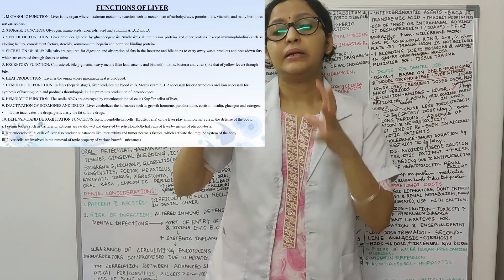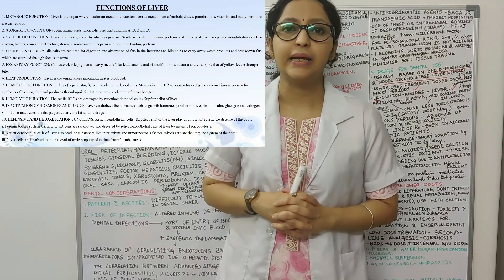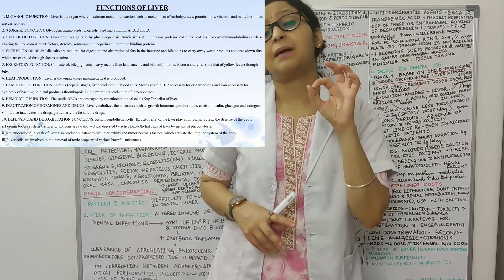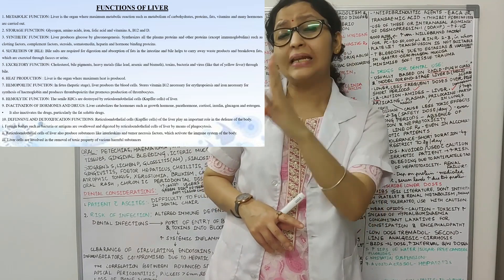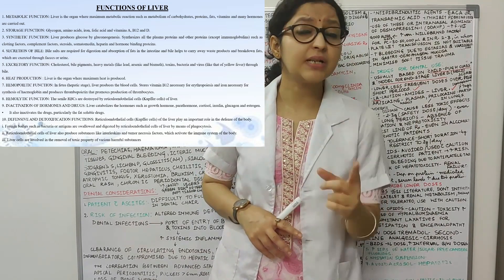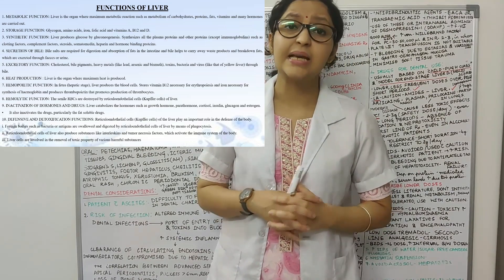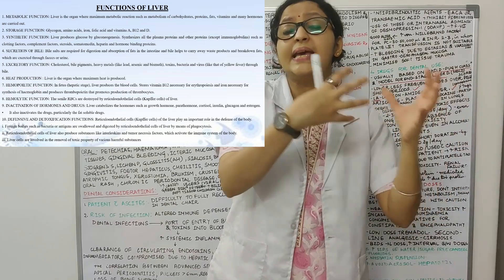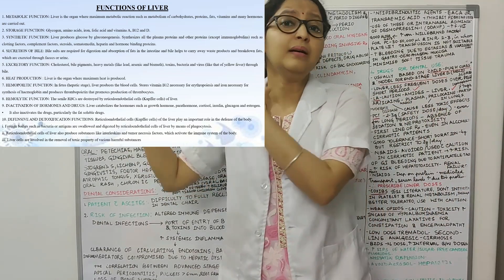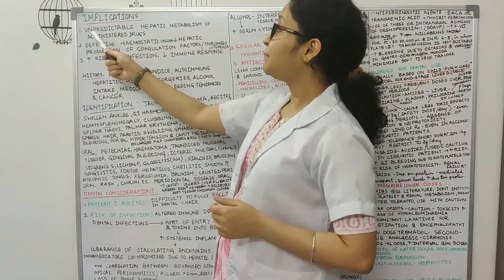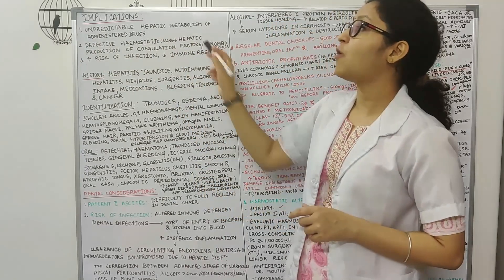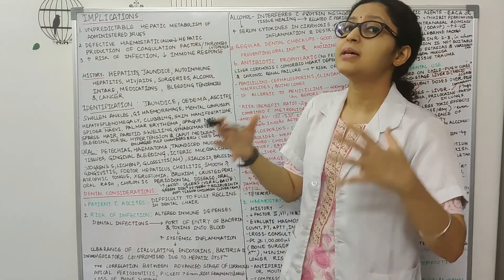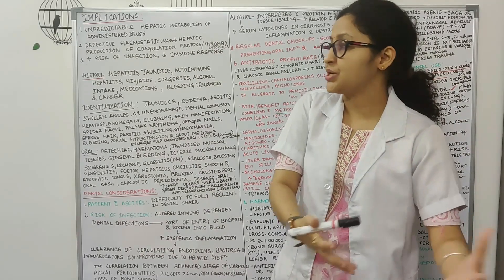So whenever we talk about a liver patient in a dental clinic, the dental considerations come down to basically three important points. The first very important point is that some of the drugs that we administer in such patients get metabolized in the liver. So there can be unpredictable hepatic metabolism of the administered drugs seen in such patients.